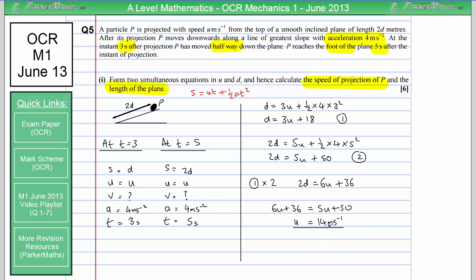Now all I've got to do is substitute my value for u back into one of these equations. I'm going to choose 1 because it's already got d equals and I'm going to get d equals 3 lots of 14 plus 18 which is 60 meters. However the length of the slope remember is 2d so the whole length of the plane is 2 lots of 60 which is 120 meters.